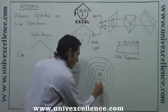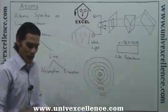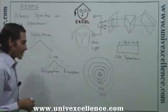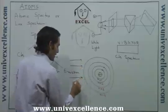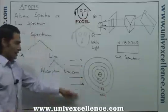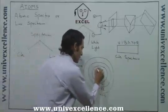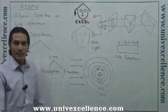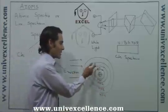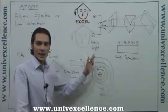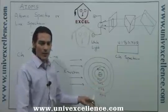Now consider that white light is incident on this hydrogen atom. The electron in the ground state can absorb energy and make a transition from the ground state to other excited states, for example n=2, n=3, or n=4.